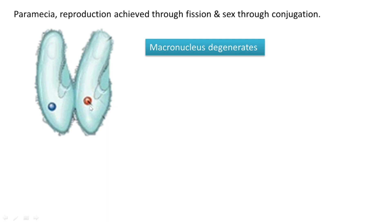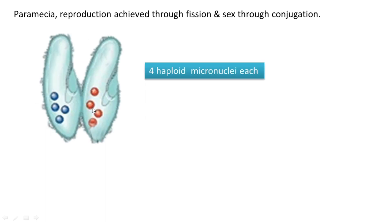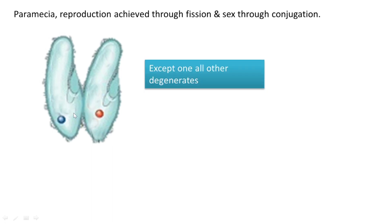After the macronucleus degenerates, the remaining micronucleus undergoes meiotic division, and as a result four haploid micronuclei are formed in each paramecia. Among the four formed in each — so eight total — all but one degenerate, meaning three out of four degenerate, keeping only one intact.